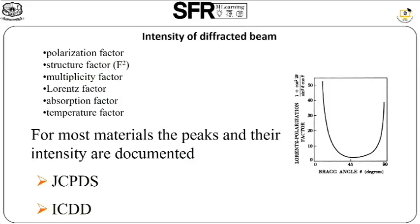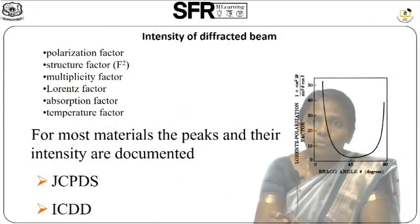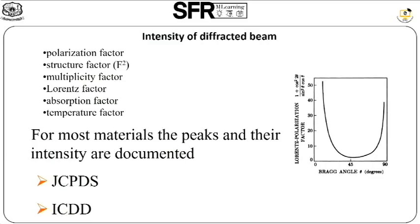After finding the structure of crystalline samples, for most materials, peaks and their intensities are documented using JCPDS files and ICDD files. If you want to know the crystal structure for your sample, you can consult the JCPDS or ICDD file to find out the crystalline structure. Additionally, X-ray reflectivity can be used to measure the thickness, roughness, and density of a material.